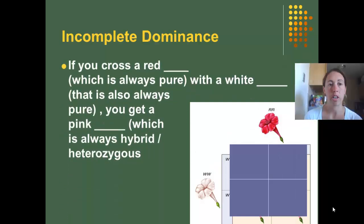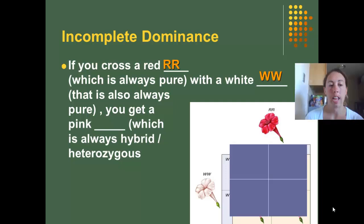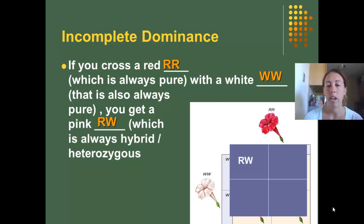For incomplete dominance, if you cross a red homozygous flower with a white homozygous flower, you will get a pink flower, which is heterozygous. In the Punnett square, you would have a dominant allele for red and a dominant allele for white.